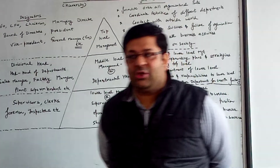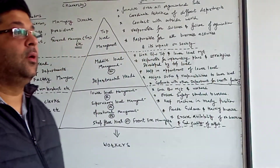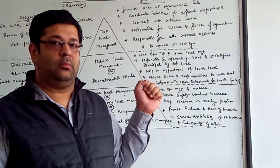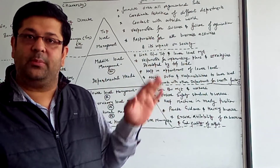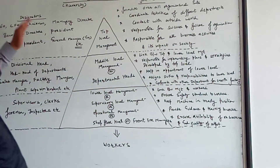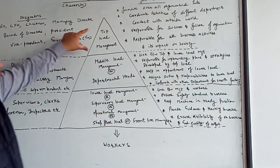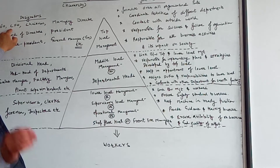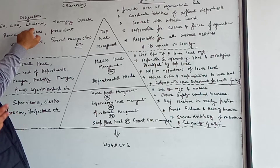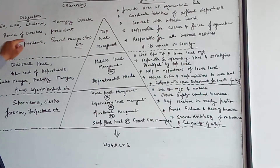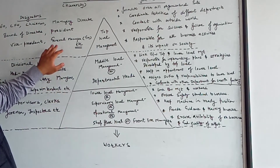Who are the top level managers? Top level managers are those who appoint the middle level and take the lead of an organization. In a school, your principal and chairman are working at top level management. Designations in top level management include CEO (Chief Executive Officer), CFO (Chief Finance Officer), Chairman, COO (Chief Operating Officer), Managing Director, Board of Directors, President, Vice President, and General Managers.